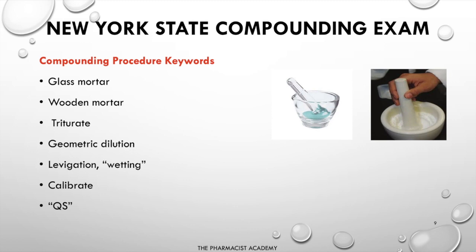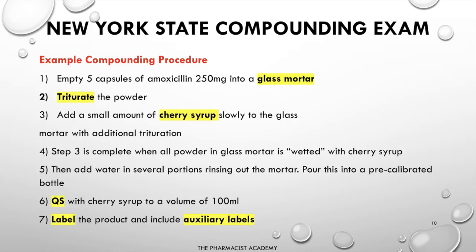Another key term is 'calibrate' — in your procedure, state that you pre-calibrated a three-ounce bottle to 30 mL before adding everything. Here's an example compounding procedure: empty five capsules of amoxicillin 250 mg into a glass mortar and triturate the powder. Add a small amount of cherry syrup slowly to the mortar with additional trituration until all powder is wetted. Then add water in several portions, rinsing out the mortar, and pour into a pre-calibrated bottle. QS with cherry syrup to a volume of 100 mL. Label the product with auxiliary labels — since it's a suspension, the label must always say 'shake well.'